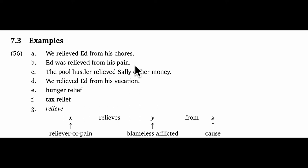In the example, Ed was relieved from his pain, we have a passive sentence. The patient is in subject position, so Ed is the blameless afflicted again. The agent here is not explicitly mentioned, but the frame tells us there must be one, and it's the person or thing that helped Ed out somehow. And finally, the pain is clearly the cause of the affliction.